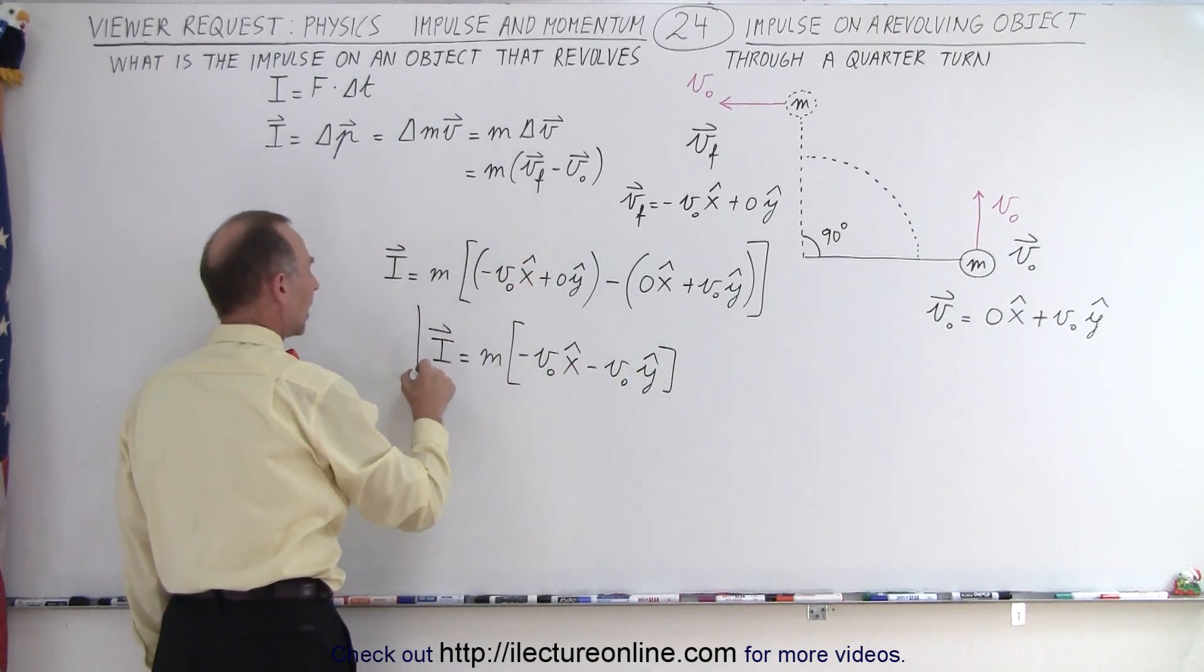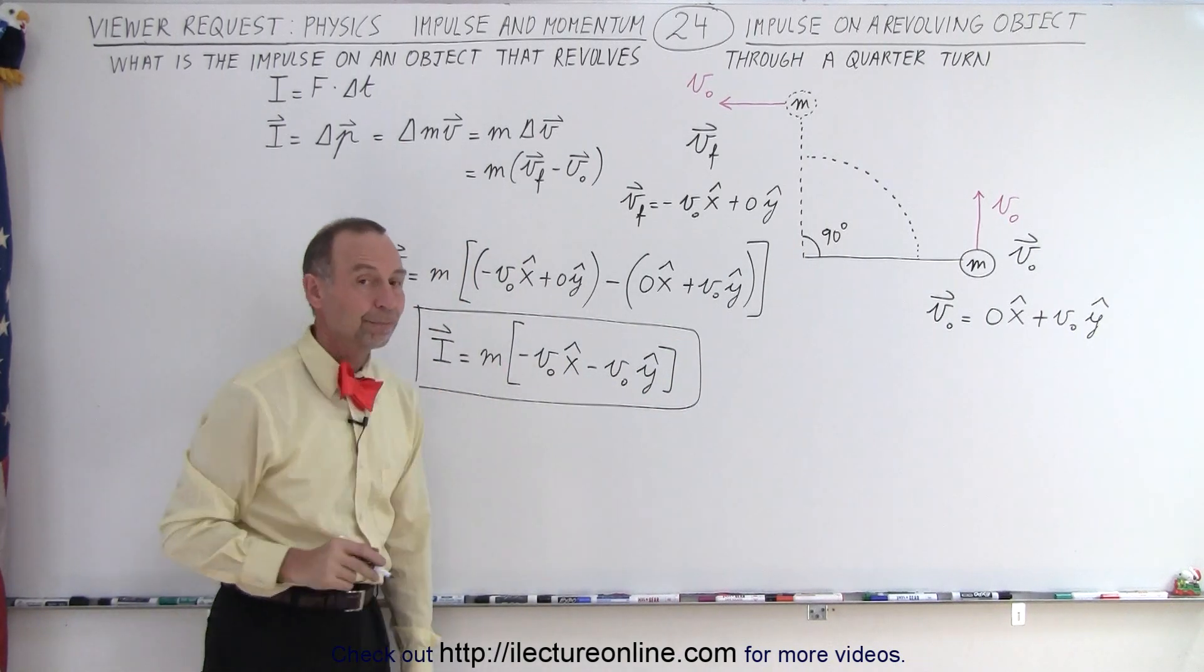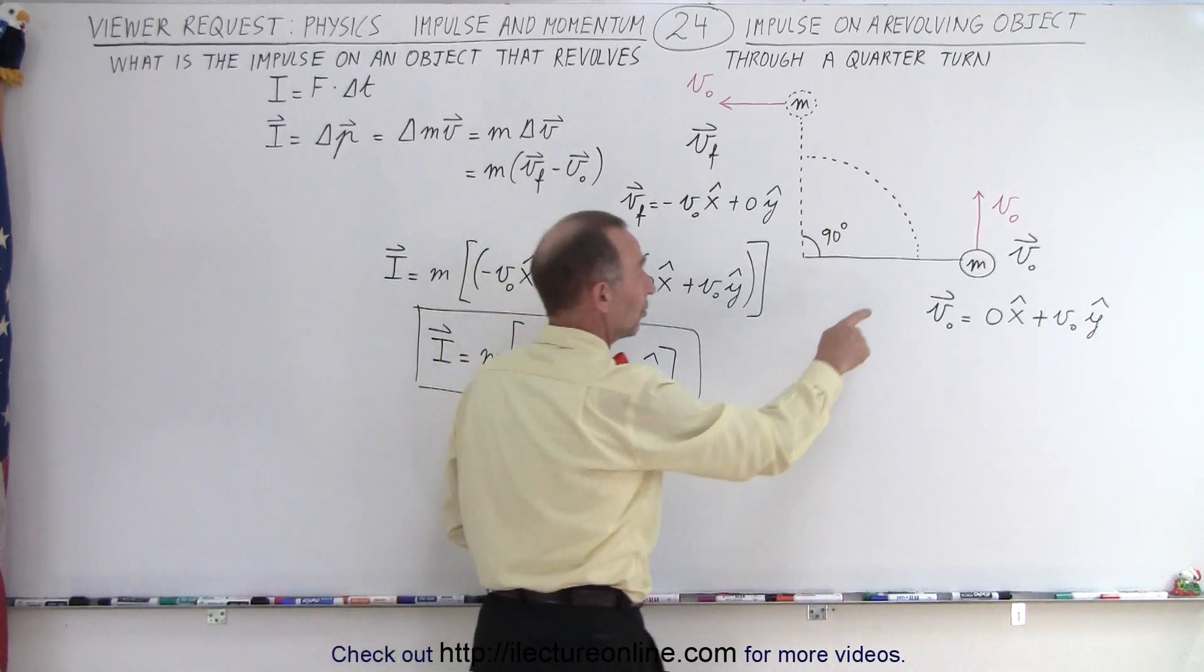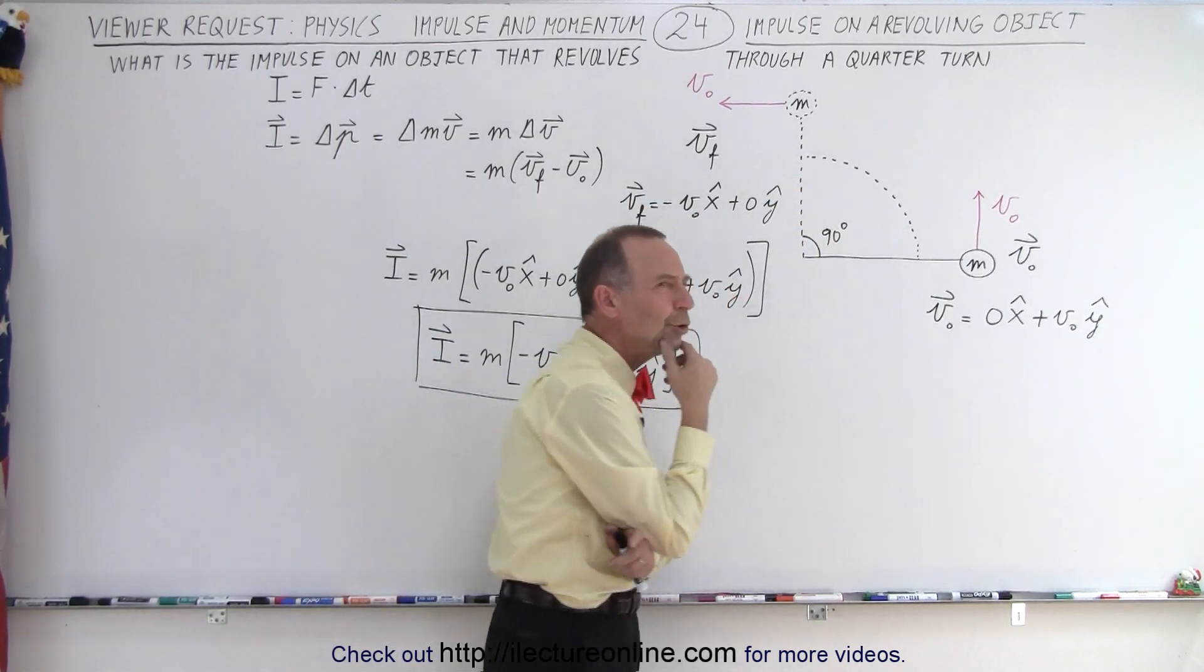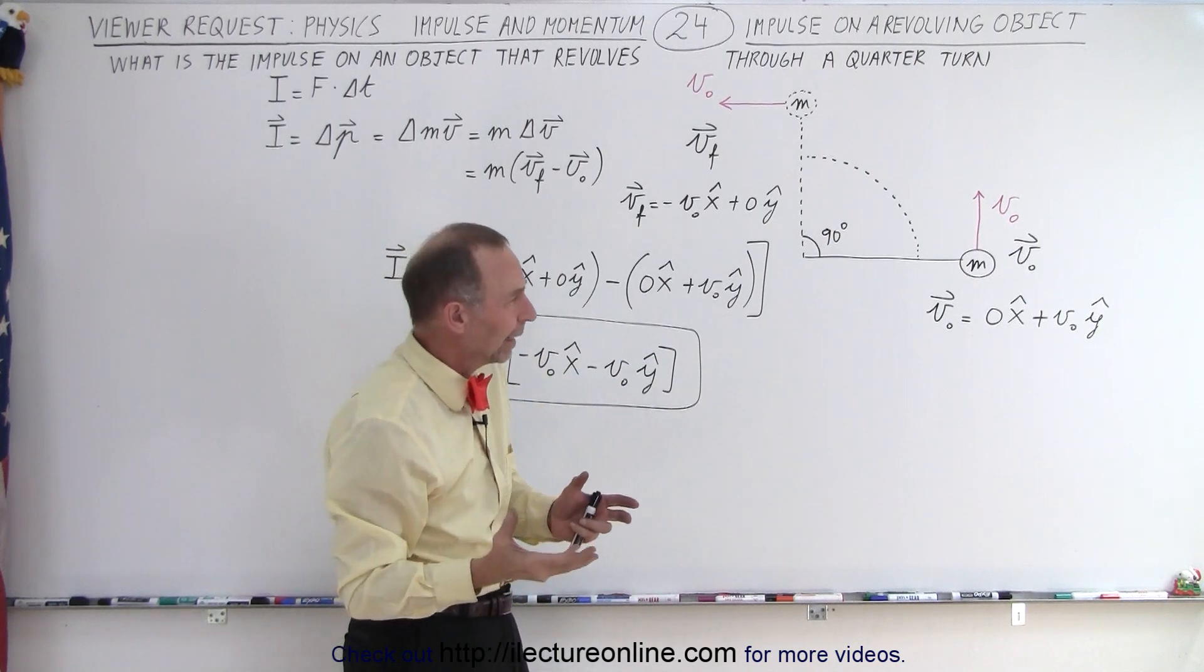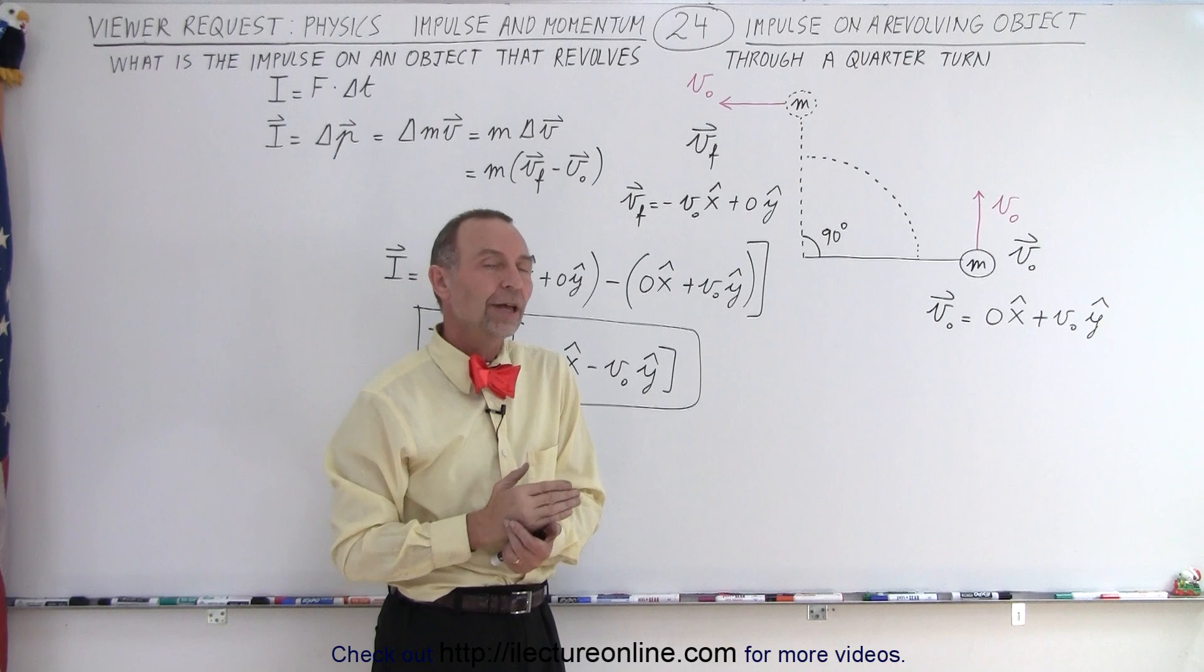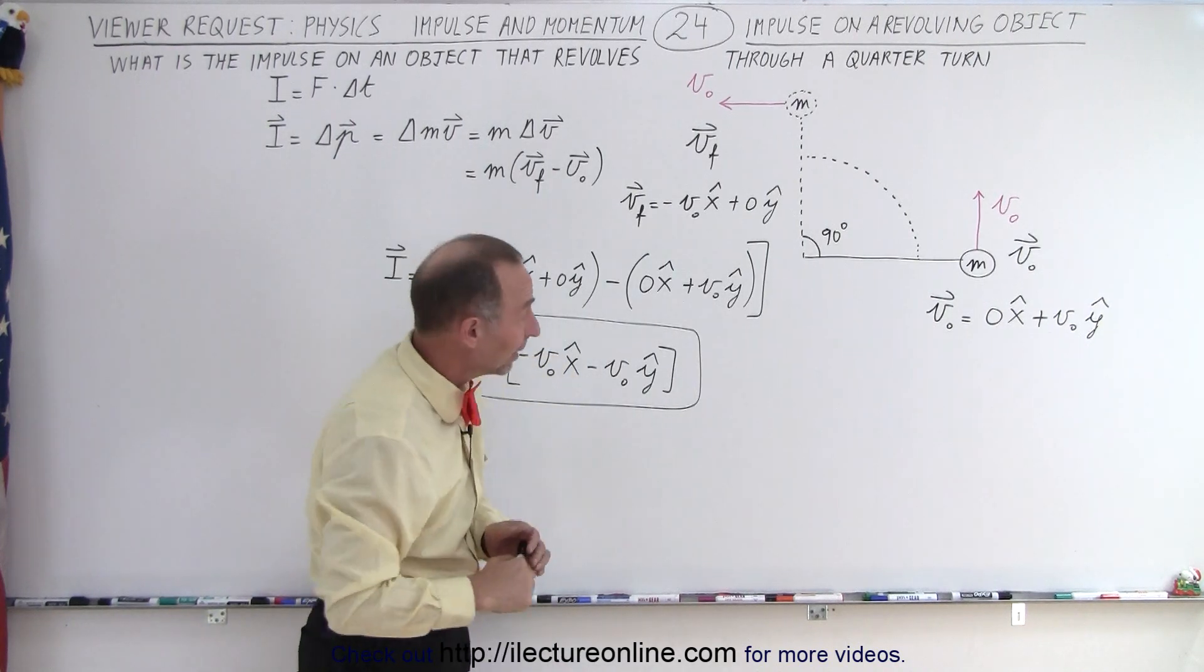So in this particular case, we can say that the impulse is equal to this. Now, that's a very special case where we start from this position and we end up in this position. But what would we do if we could start from any position and move to any sort of angle? Well, we could start with a 90 degree angle and then we could reduce it to any sort of angle. What would be the impulse then? Well, that's a more general case. Let's try to approach that one on the next video.